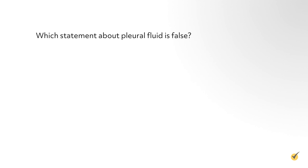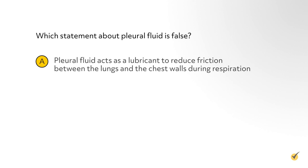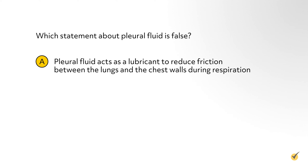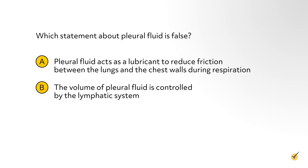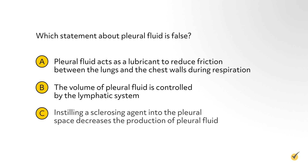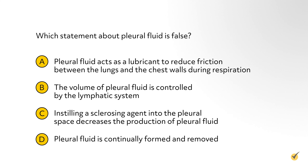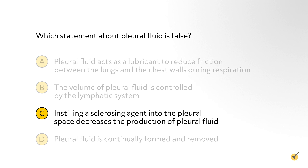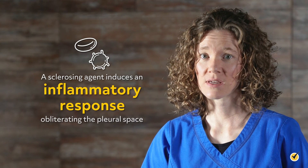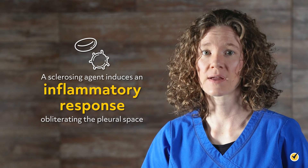Which statement about pleural fluid is false? A: pleural fluid acts as a lubricant to reduce friction between the lungs and the chest walls during respiration. B: the volume of pleural fluid is controlled by the lymphatic system. C: instilling a sclerosing agent into the pleural space decreases the production of pleural fluid. Or D: pleural fluid is continually formed and removed. If you chose C, you're correct. A sclerosing agent induces an inflammatory response obliterating the pleural space.